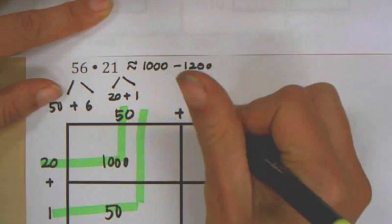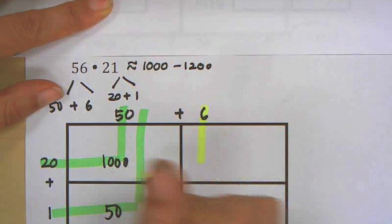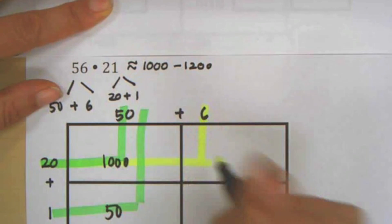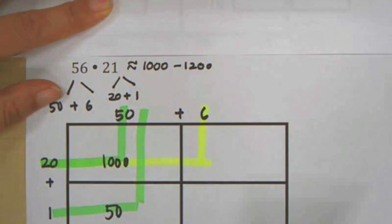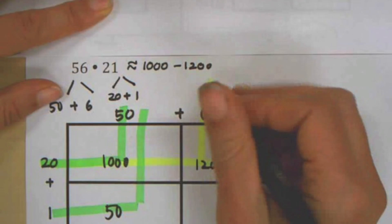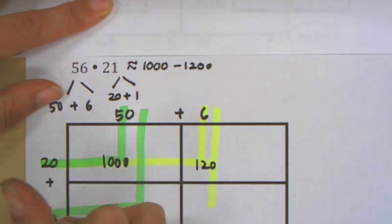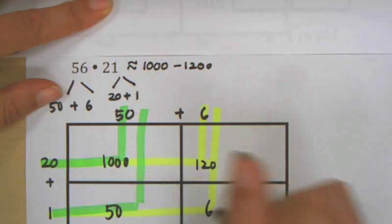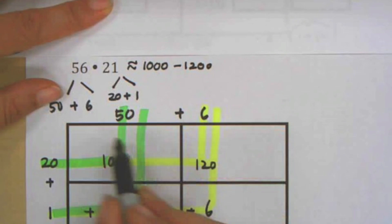And for the second part, I've got the 6 times the 20, which is 120. And the 6 times the 1.